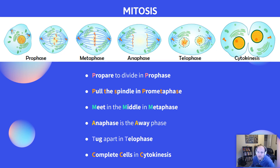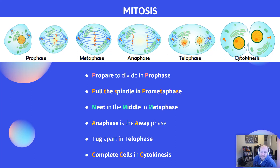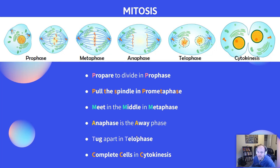In telophase, all the cell components are getting tugged apart and we're starting to form two new cells. Then in cytokinesis, the cleavage happens where those two cells are going to fully pinch apart and become two completely independent cells. My little tricks: we prepare to divide in prophase, you pull the spindle in prometaphase, we meet in the middle at metaphase, anaphase is the away phase, the cells get tugged apart in telophase, and you have complete cells in cytokinesis.